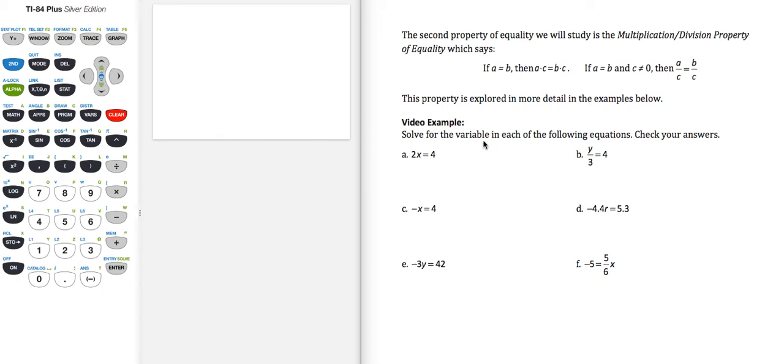In this problem, we're asked to solve for the variable in each of the following equations and check our answers. For a through f, we're going to be using the multiplication division property of equality. And what this property says, if I have a equals b, then a times c equals b times c, or a divided by c equals b divided by c, as long as c is not zero.